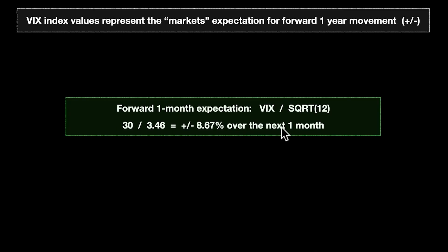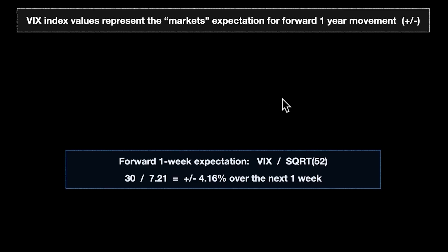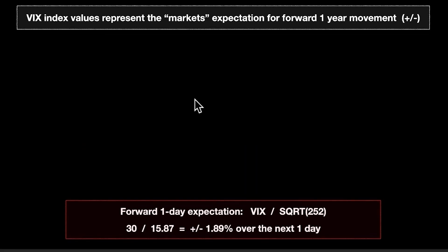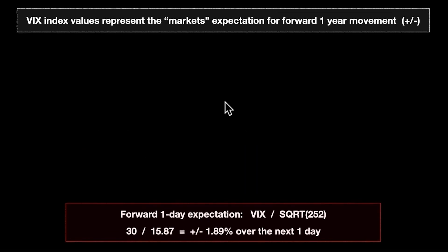You can also calculate the weekly implied move. There are 52 weeks in a year, so you take that VIX of 30 and divide by the square root of 52, which is 7.21. That gives you an implied move of plus or minus 4.16% over the next one week.